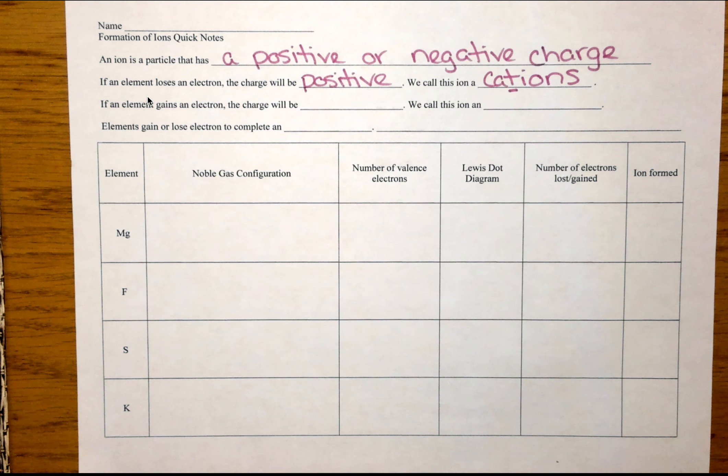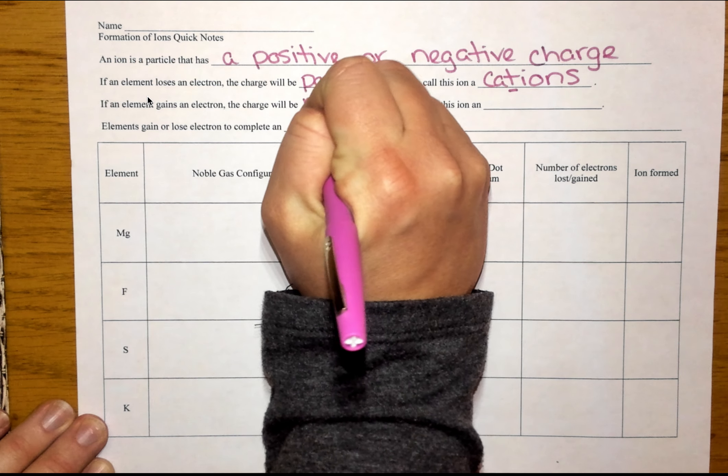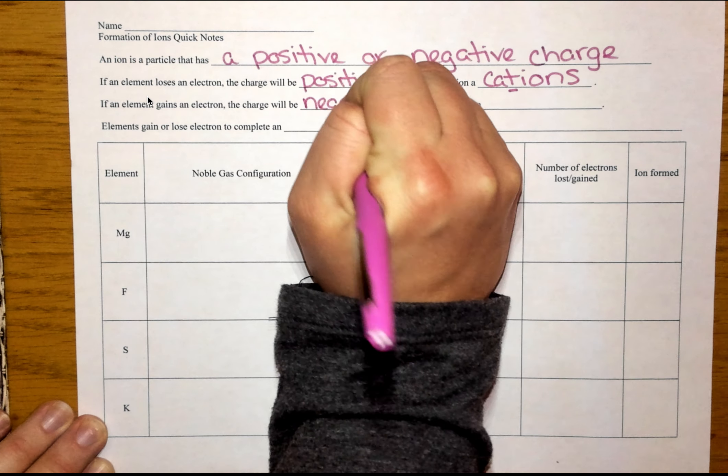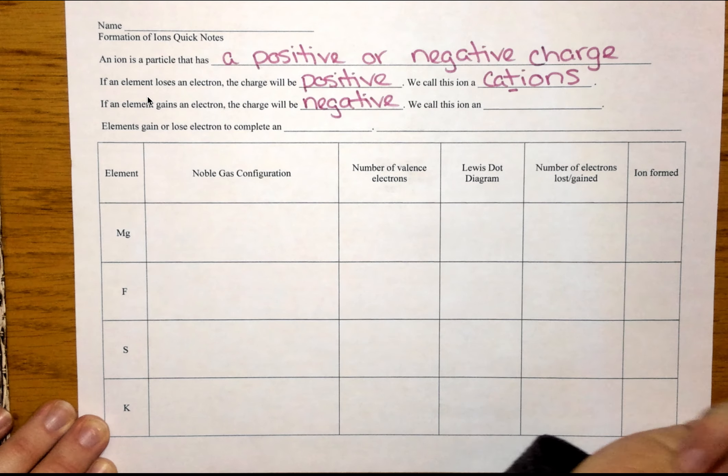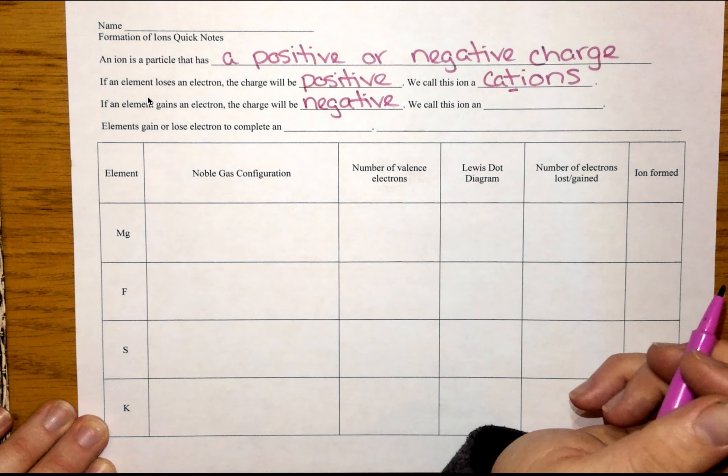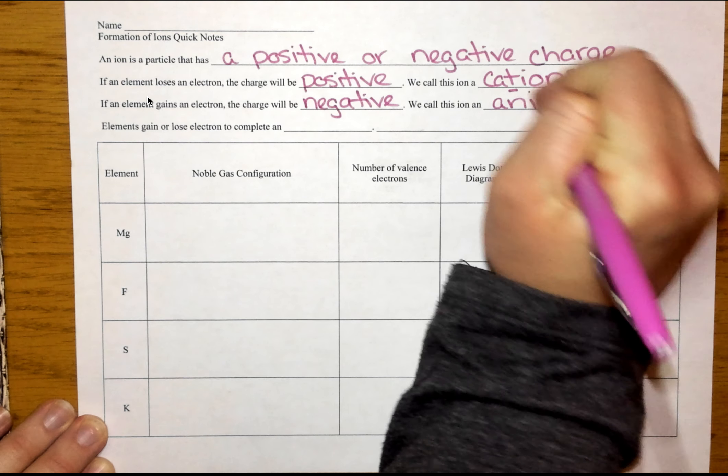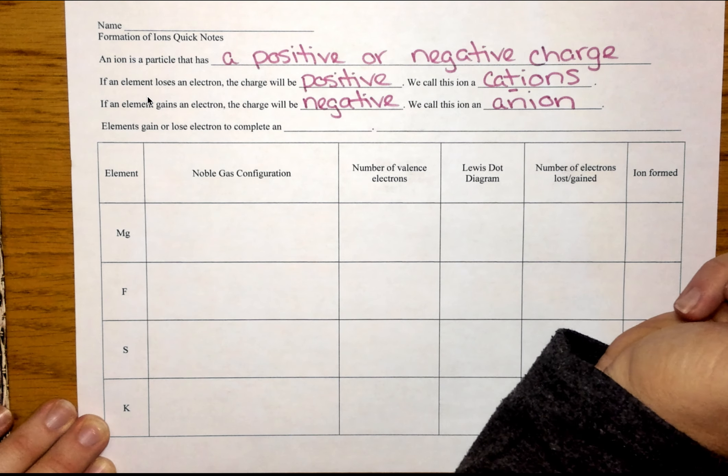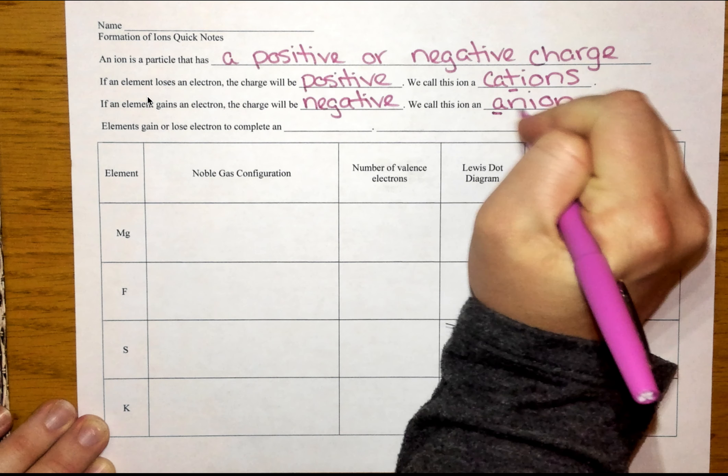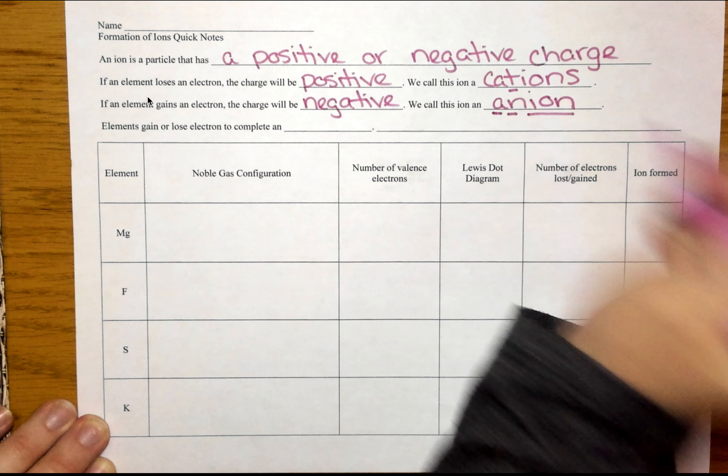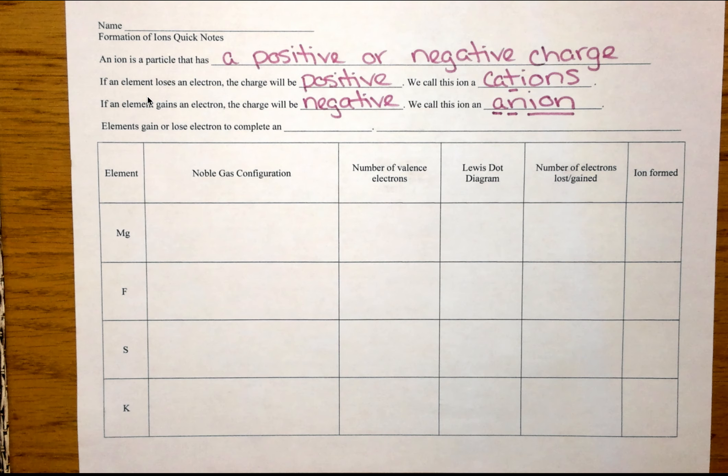So now we're going to look at if an element were to gain an electron. So if we are gaining a negative particle, my charge on my overall ion is going to be negative. And we call this ion an anion. Now the way I like to remember this is anions are a negative ion.